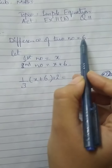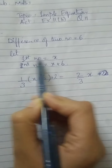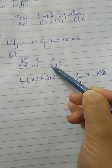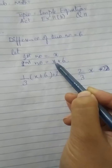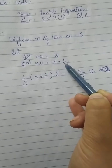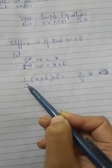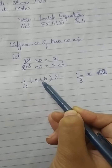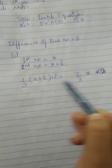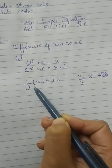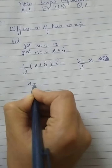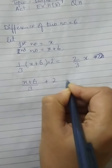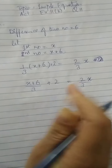Question mein yeh unhone bola: the difference of two numbers is 6. Do numbers hain jinka difference 6 hai. Pehle number mein 6 plus karne se doosra number aata hai. One third of larger number (X+6) divided by 3, plus 2, is equal to two thirds of smaller number (2/3)X. So this is the equation: (X+6)/3 + 2 = (2/3)X. So this is the equation.